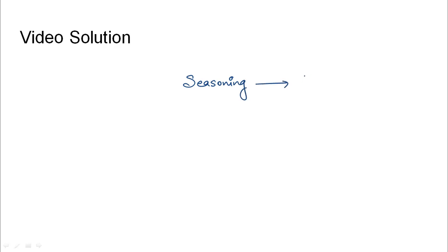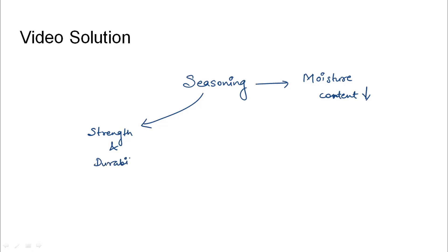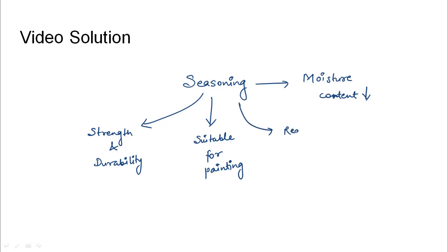Seasoning is primarily done to reduce the moisture content. From seasoning we can achieve the following: first, seasoning provides strength and durability to timber; secondly, it makes it suitable for painting; third, it reduces any possible shrinkage and warping in the timber.